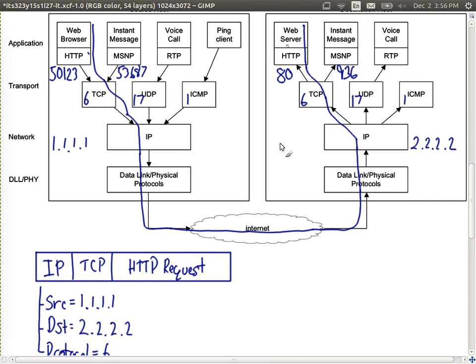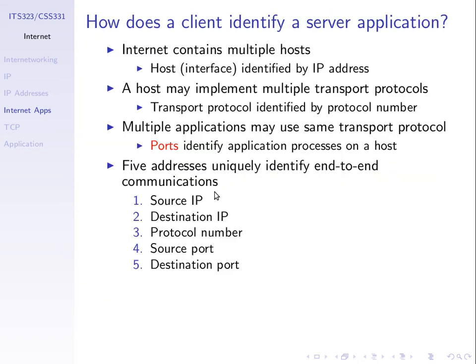What we've introduced here, important for internet communications, is two new types of addresses. In total, we have five addresses that identify our communications on the internet: the source IP address and destination IP address — identifying hosts or interfaces on the internet; a protocol number — identifying the transport protocol both hosts are using, number 6 for TCP, 17 for UDP; and port numbers — identifying the applications communicating: source port for the client application, and destination port for the server application, such as port 80 for web browsing.